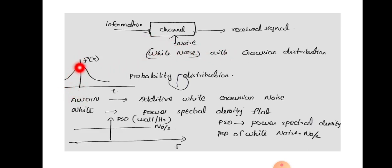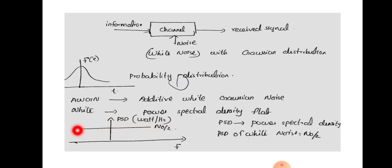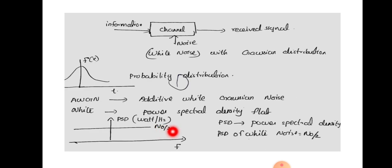The Gaussian distribution for the noise has a form where f(x) represents the probability distribution function. AWGN means Additive White Gaussian Noise, added to the channel during transmission. It is called white noise because its power spectral density is flat for both positive and negative frequencies. The power spectral density for white noise is represented by a flat curve where, when frequency f is plotted against power spectral density, you get a flat curve with value equal to N0/2.